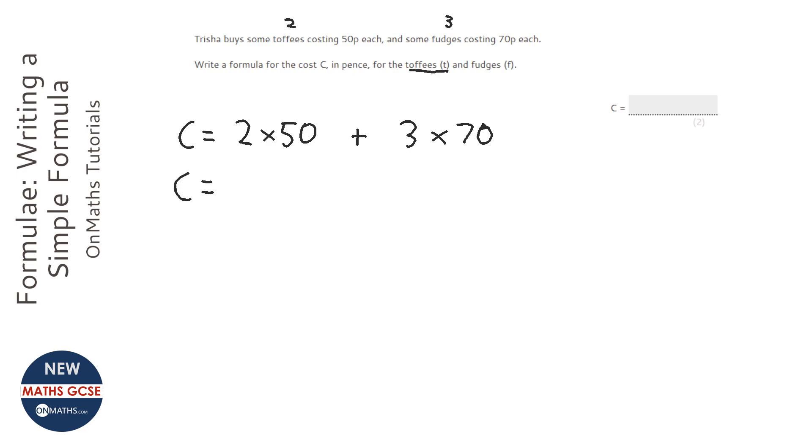So instead of two toffees we have t toffees, and instead of three fudges we have f fudges. In algebra we always put the number before the letter and we don't show the times sign, so it's 50t plus 70f.